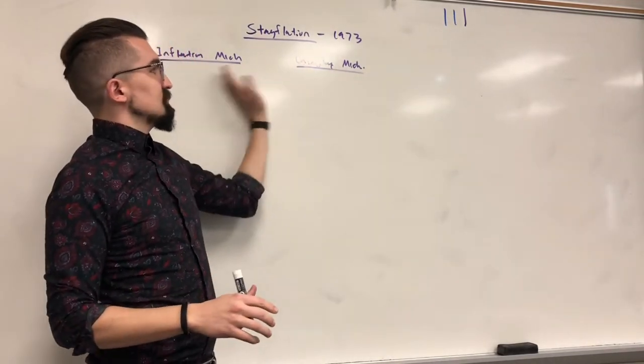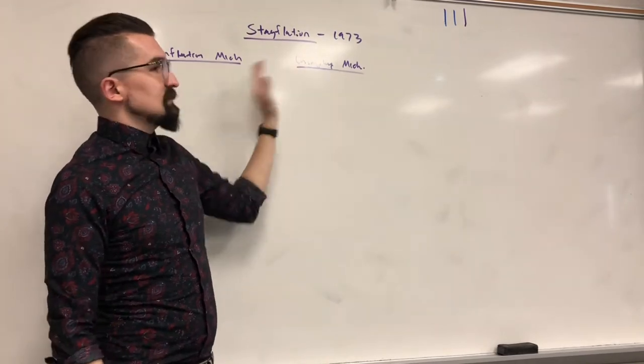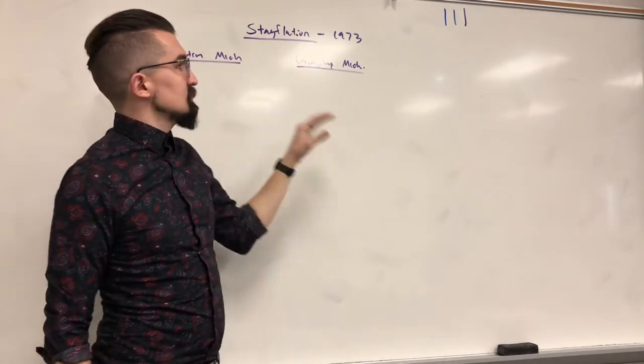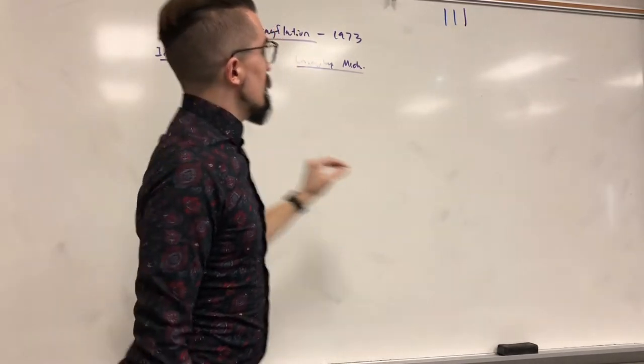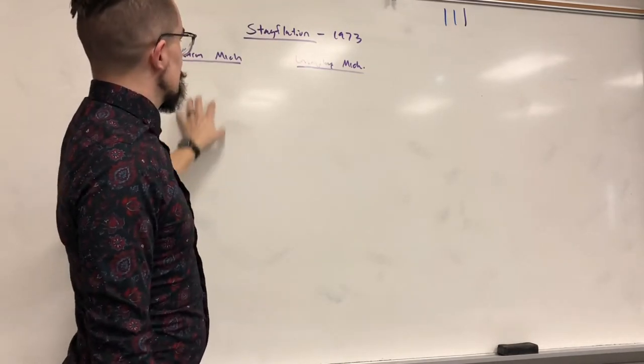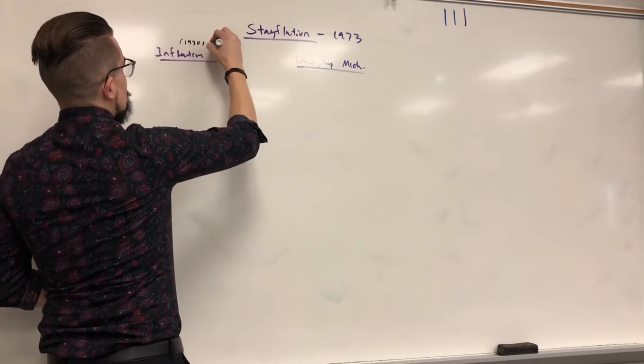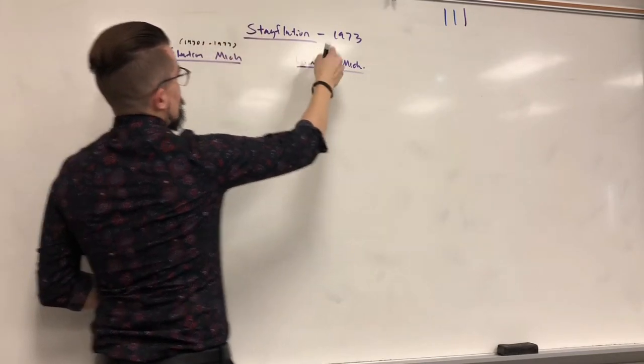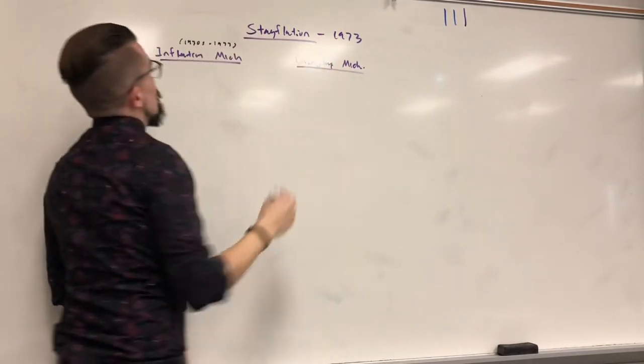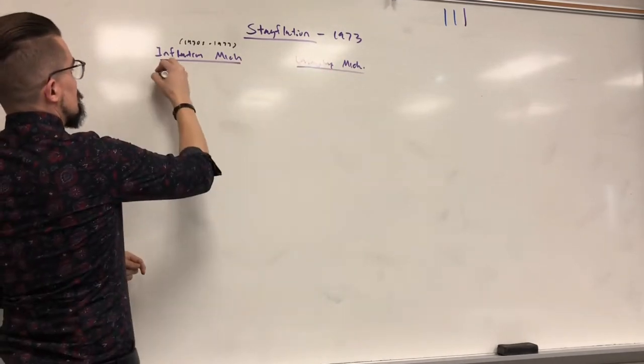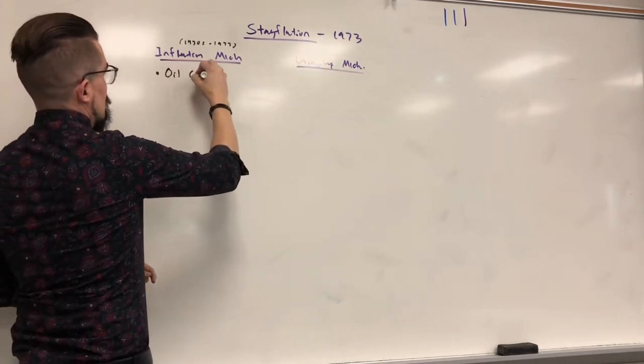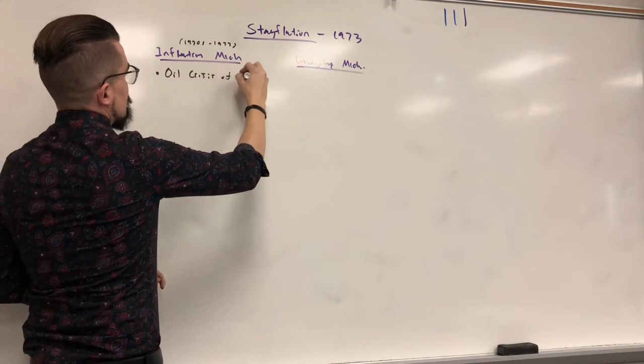So we probably won't finish this today, but we'll make this list probably tomorrow when we finish the notes up. I'm going to tell you about some factors that caused inflation to be rising from the 1930s all the way to 1973 and the factors that caused unemployment in the same era. I'm going to focus on this one real quick because one of them is definitely the oil crisis of 1973.